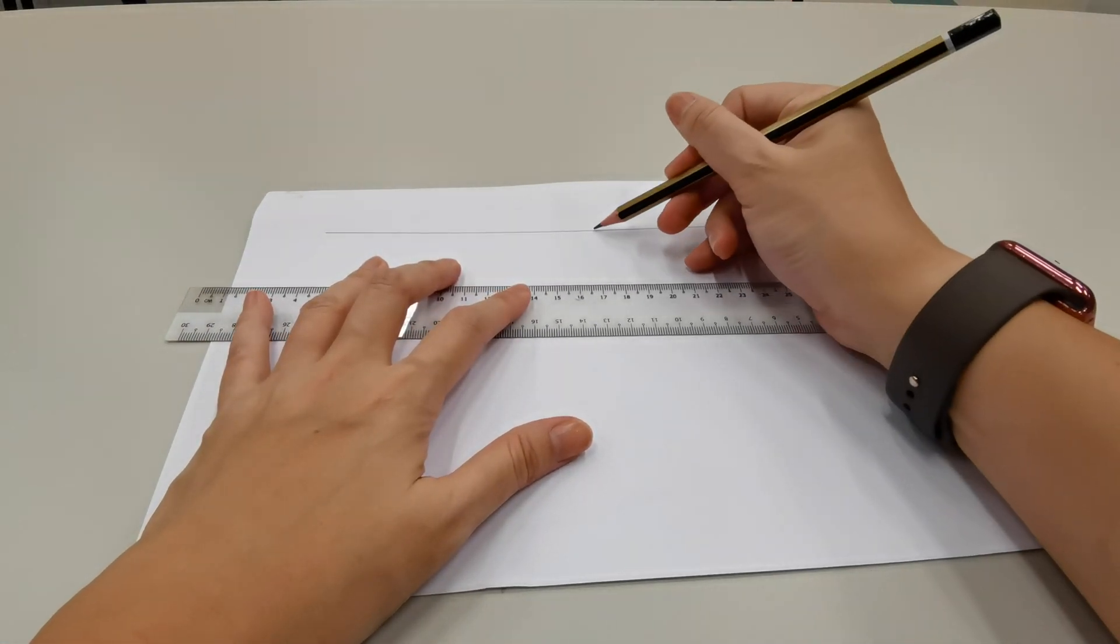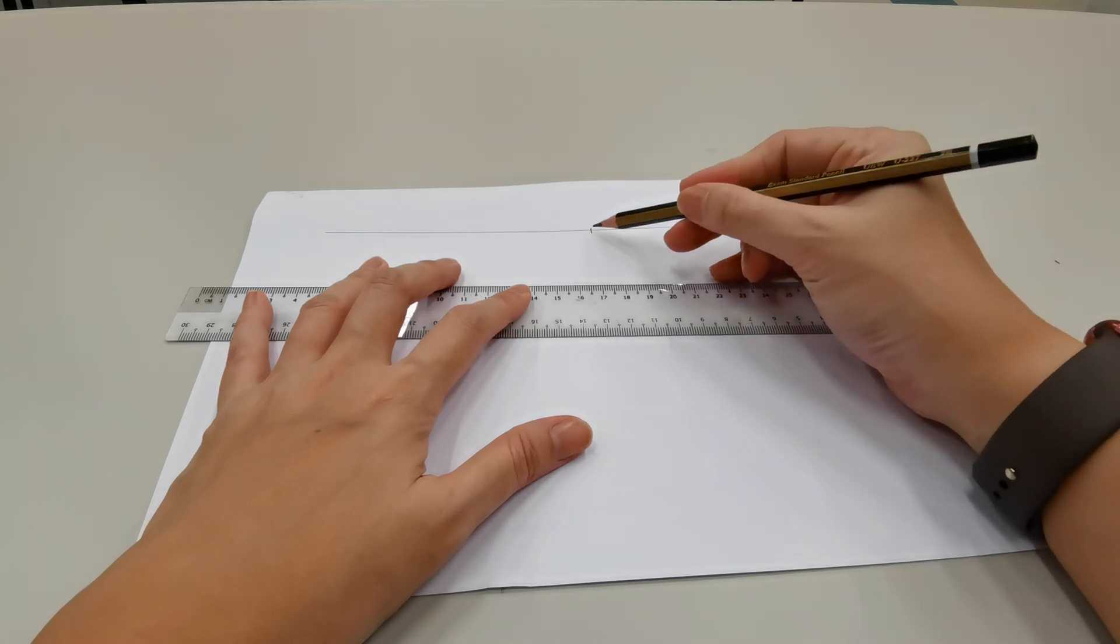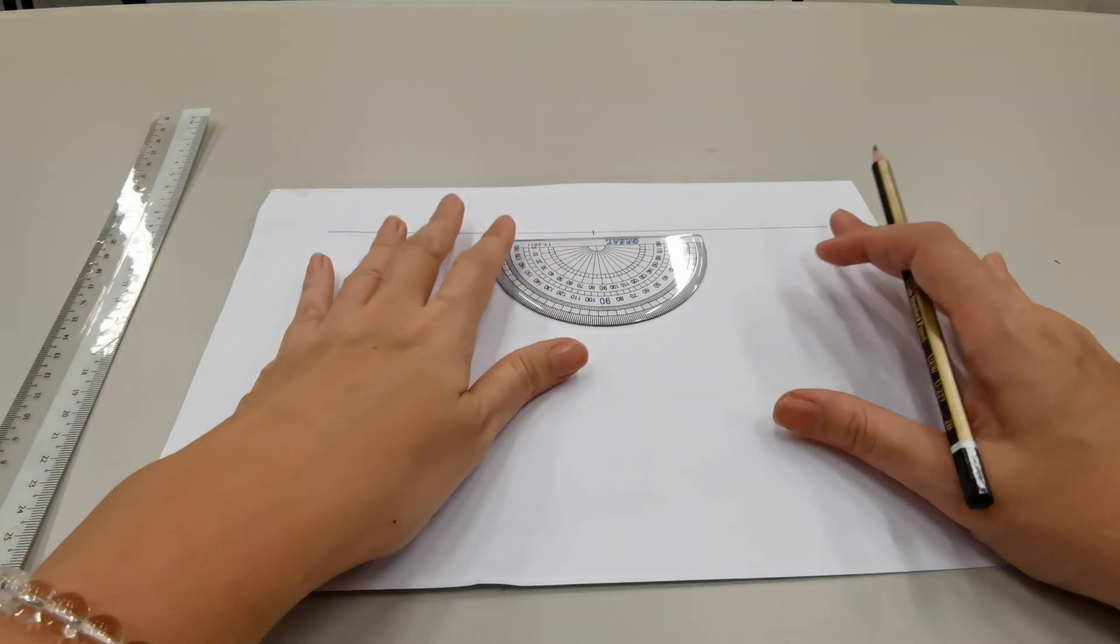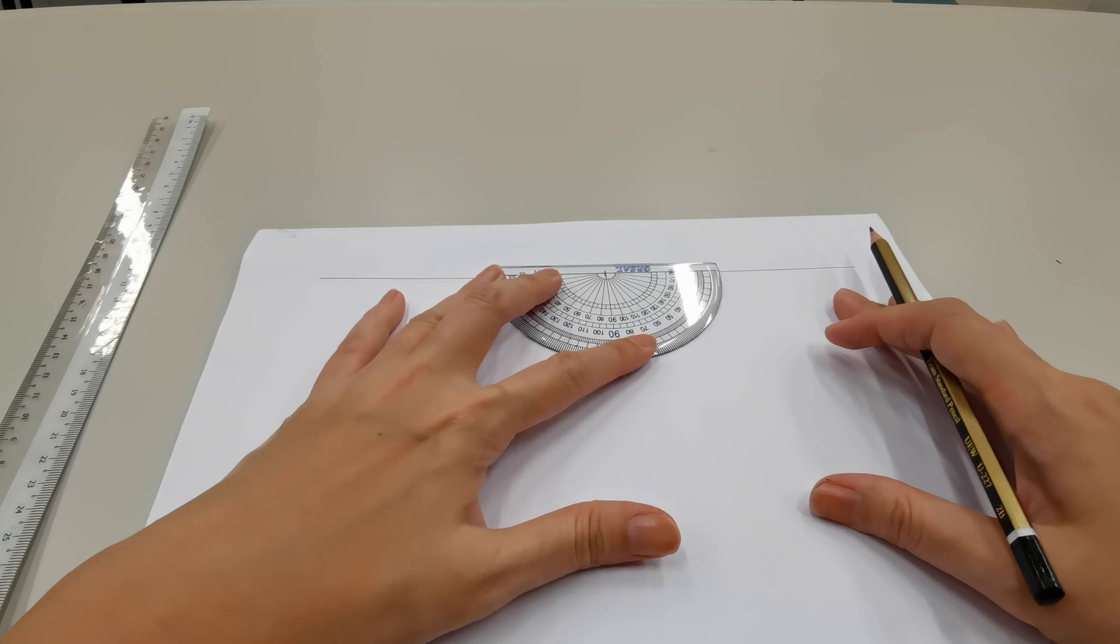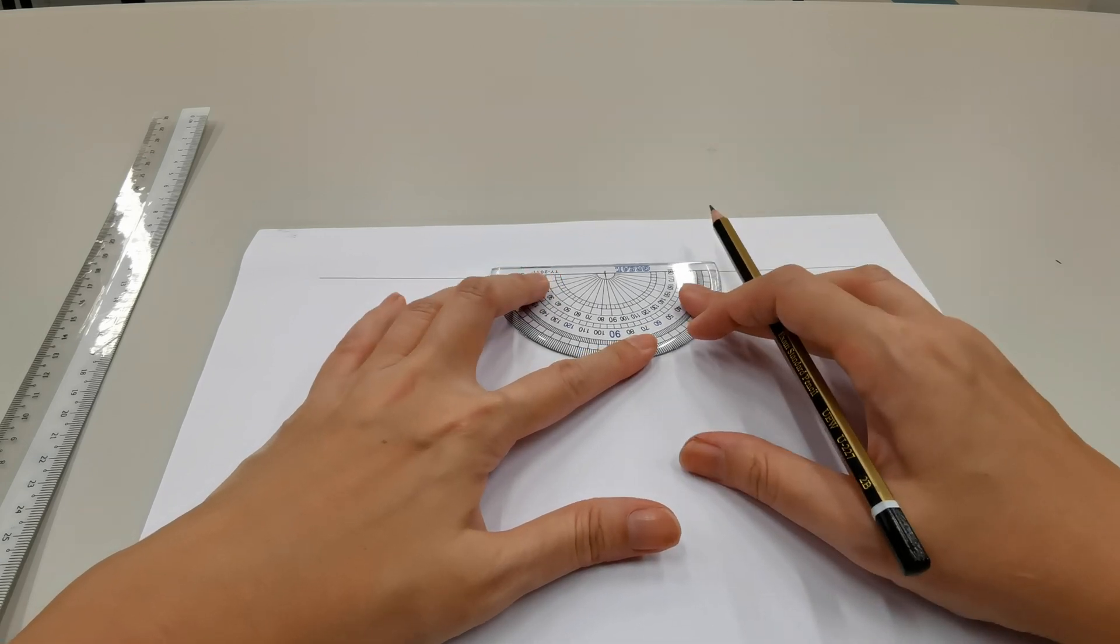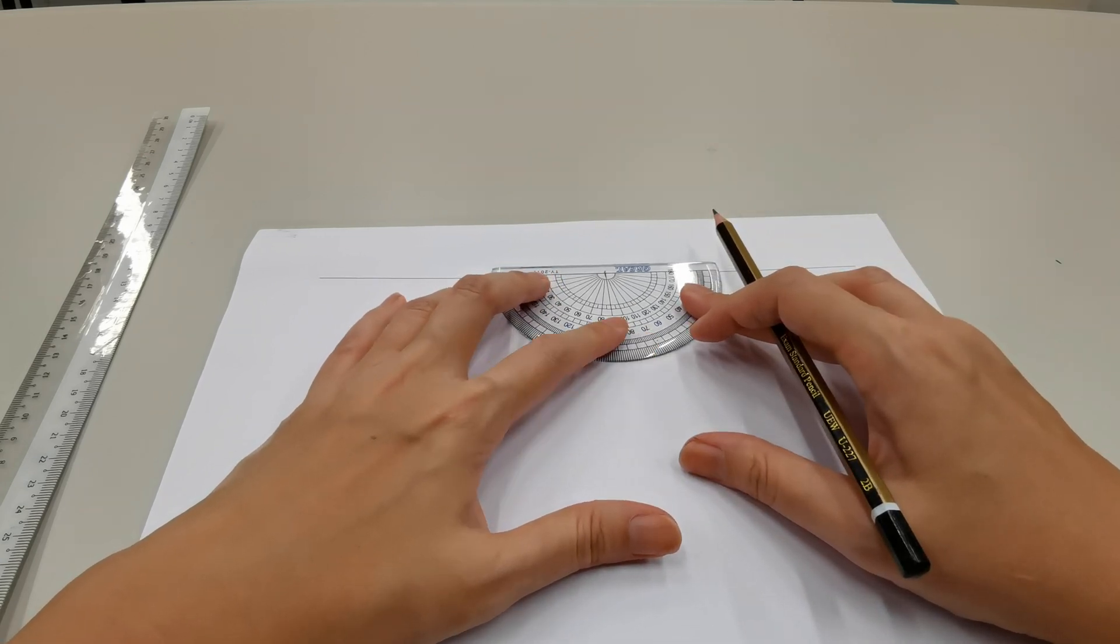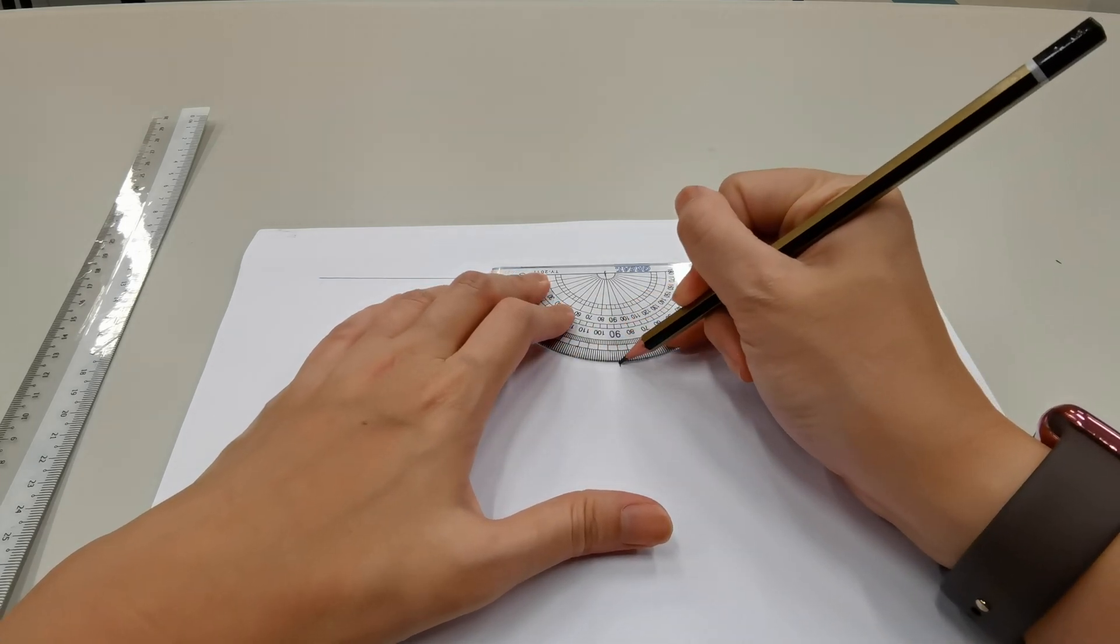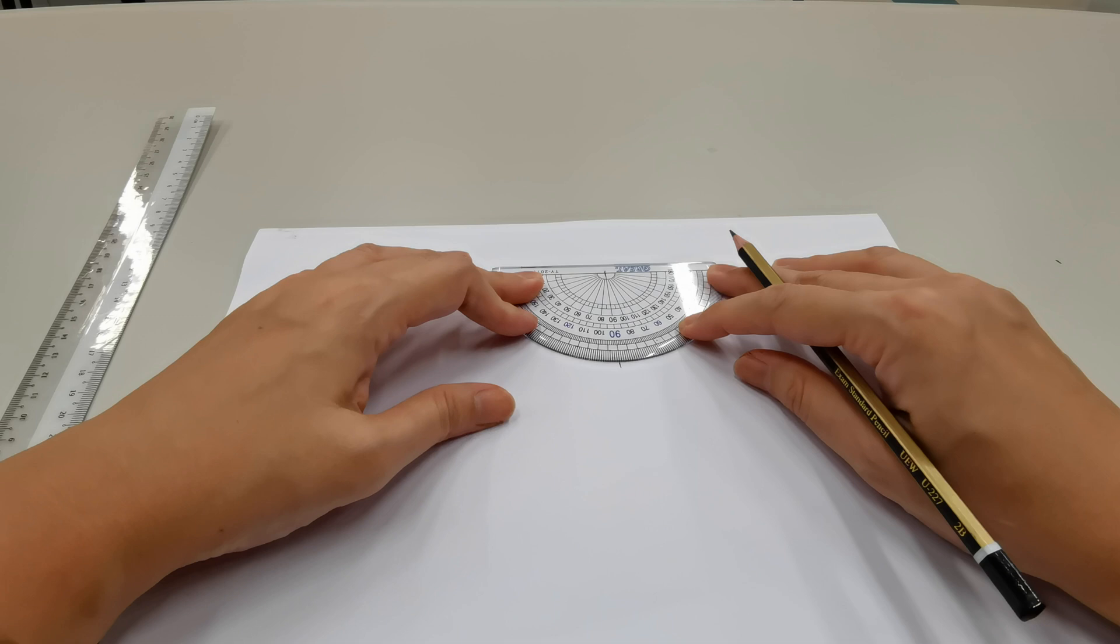Next, we're going to make a marking in the middle, so this would be our reference point. And using the protractor, what we will do next is we will measure out the 90 degree point for our normal line, and we will measure out our incident angle.